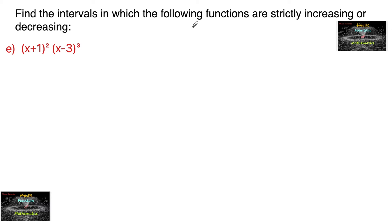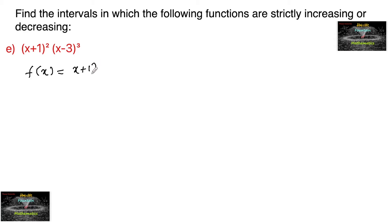Find the intervals in which the following functions are strictly increasing or decreasing. Given the function f(x) = (x+1)² · (x−3)³.